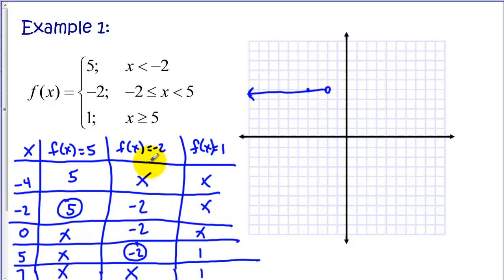Okay, so let's do our middle function. So now at -2, we are at -2. And I have a point there. I have a point at 0, -2. And I have a point at 5, -2.